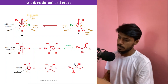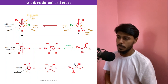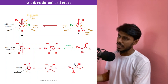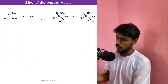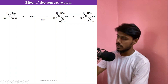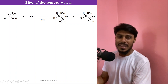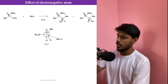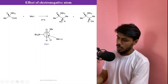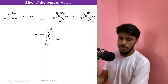This is called the Felkin-Anh model. You can apply it to predict the outcome of diastereotopic attack on a carbonyl compound. Now let us see what happens when we have an electronegative group on the alpha carbon. In this example, there is an NBn2 group (benzyl-protected nitrogen), which is electronegative. Regardless of its size, you must place this electronegative group perpendicular to the carbonyl group — this gives the correct major populated conformation.